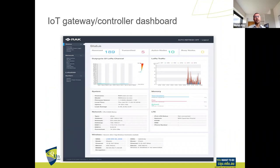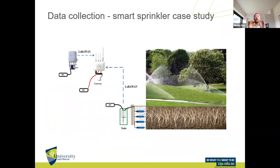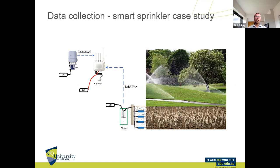The gateway has a dashboard. This is just a screenshot — there is a lot of information here. Anyone can manage the gateway or controller using the dashboard operating system. So far we have talked about the micro weather station, gateway, sensors, and the wireless communication system — sensors talking to the gateway using LoRaWAN, and the micro weather station also talking to the gateway using LoRaWAN.